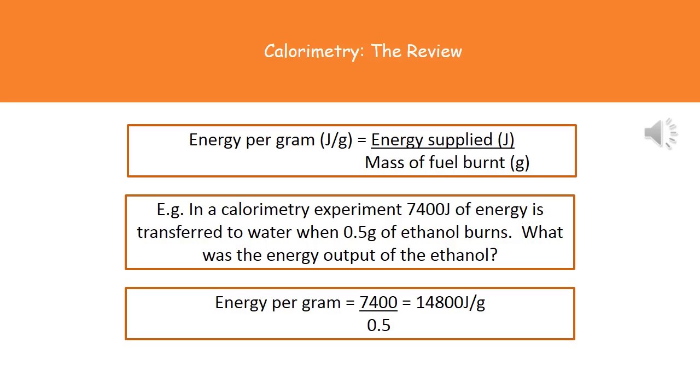The second calculation that you could be asked to do is working out how much energy is released per gram of fuel that's burnt. So here what we need to do is carry out that first calculation from the previous slide and then using that answer we divide it by the mass of fuel that we actually burnt.